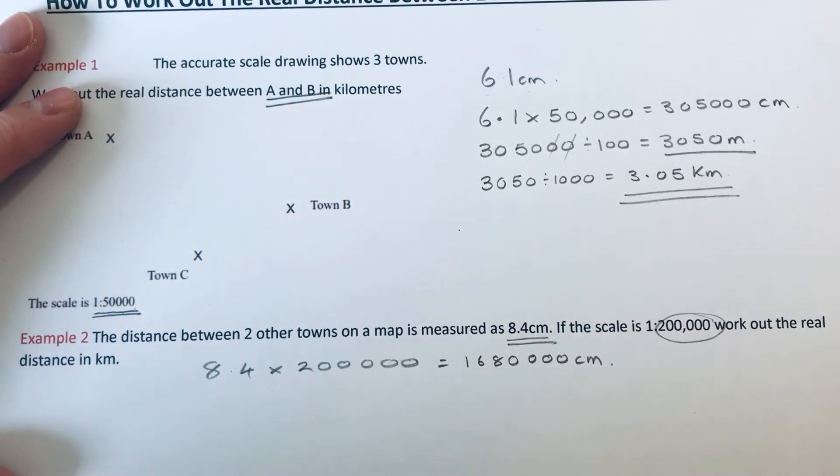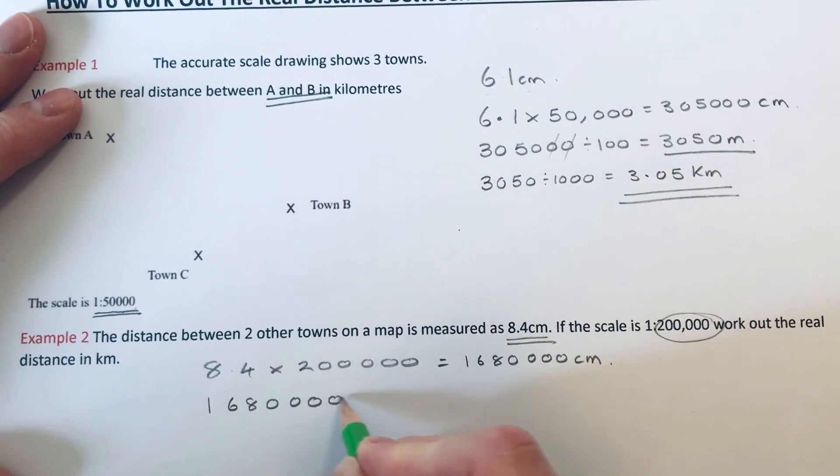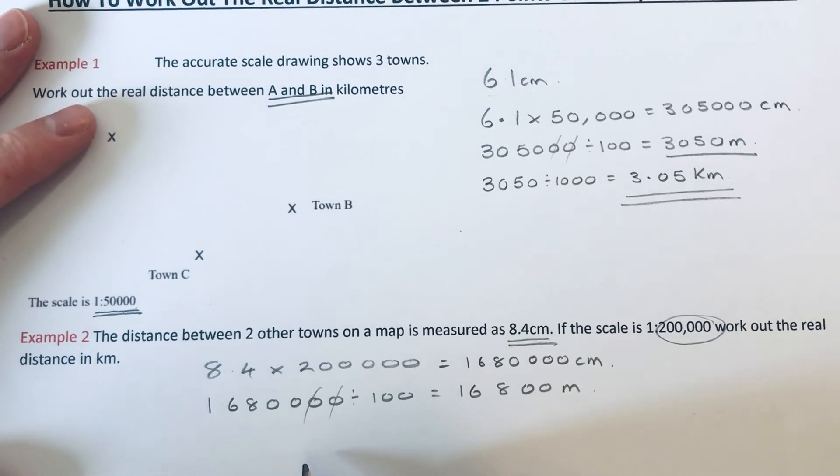To get that answer in meters, we divide it by 100, which gives us 16,800. Then the final step is to divide it by 1,000 to get it into kilometers.